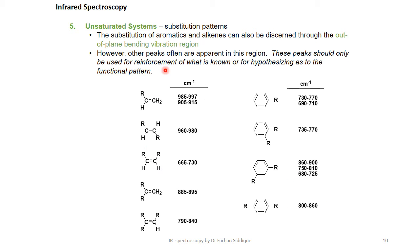Unsaturated system substitution patterns involving the substitution of aromatics and alkynes can be discerned through the out-of-plane bending vibration region. However, other peaks often are apparent in this region. These peaks should only be used for reinforcement of what is known or for hypothesizing as to the functional pattern. Alkenes and different aromatics are shown with their ranges.